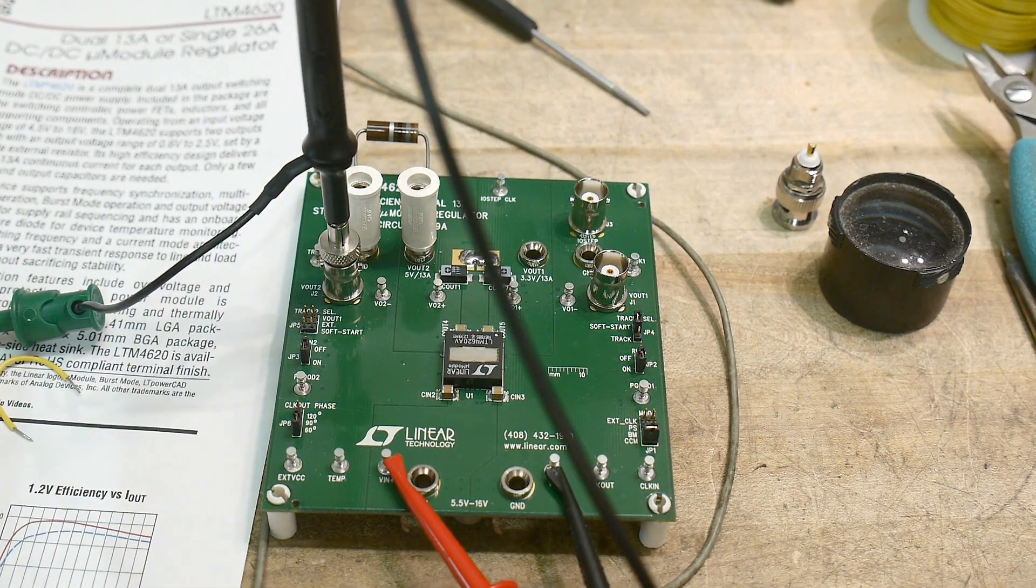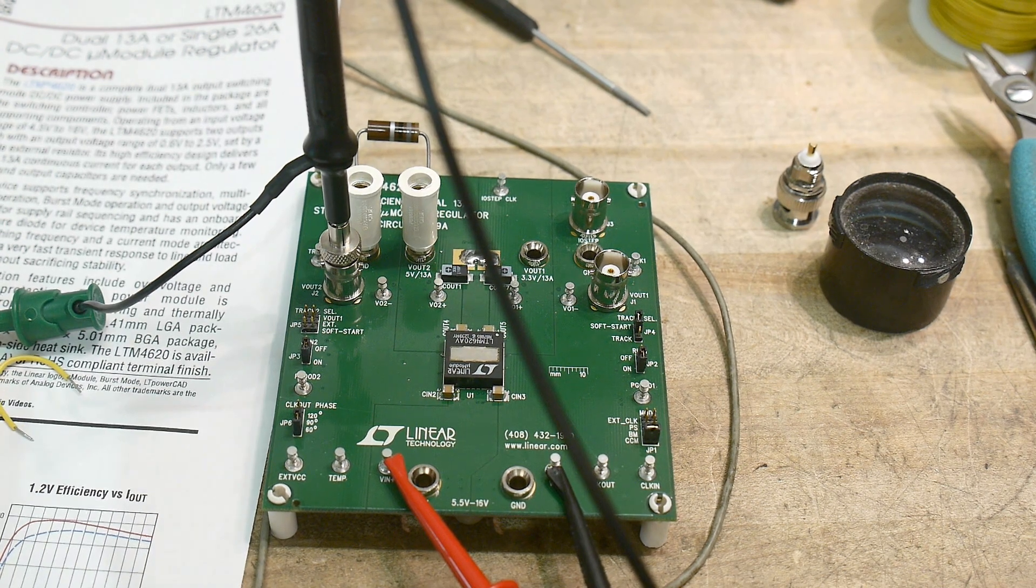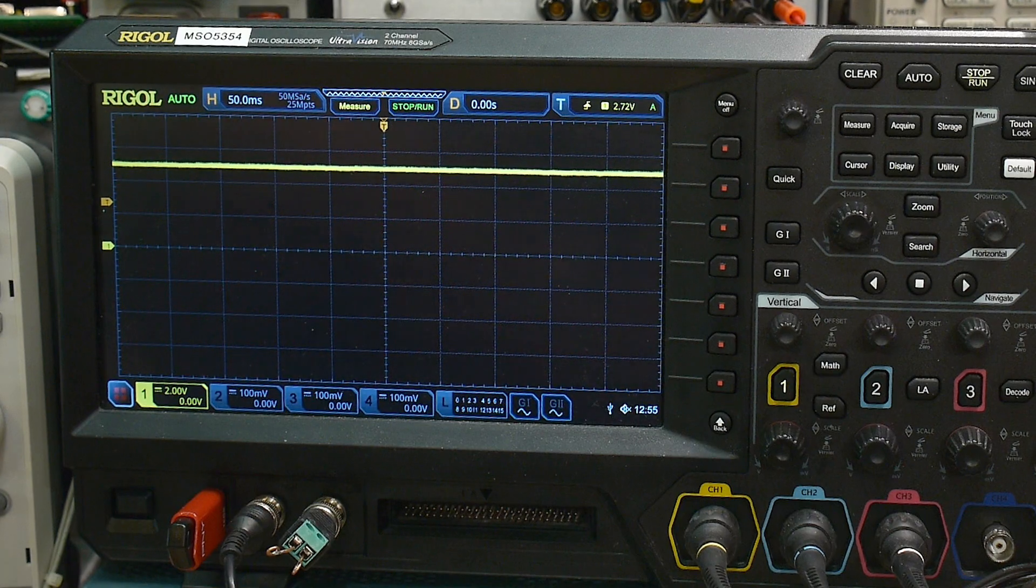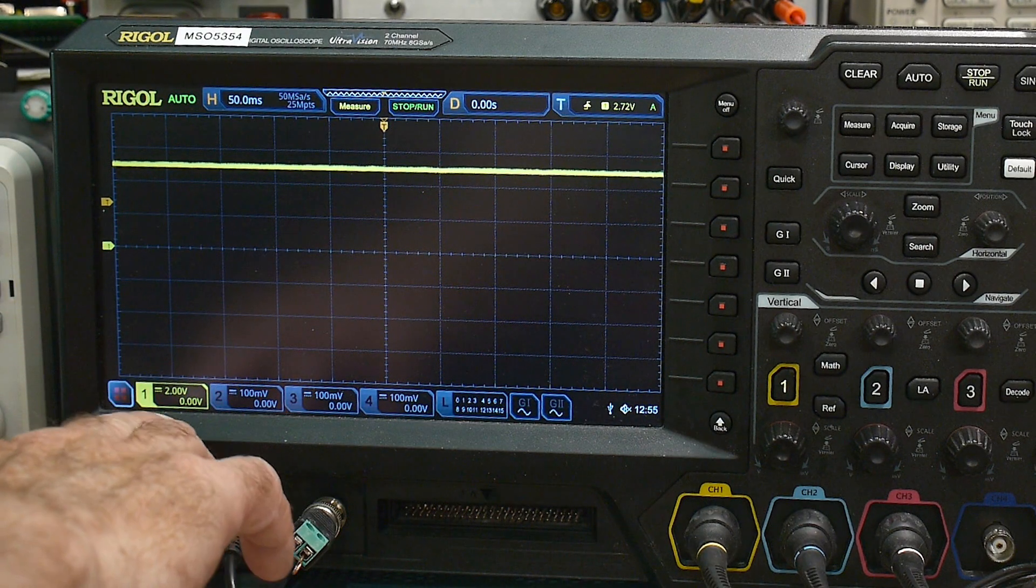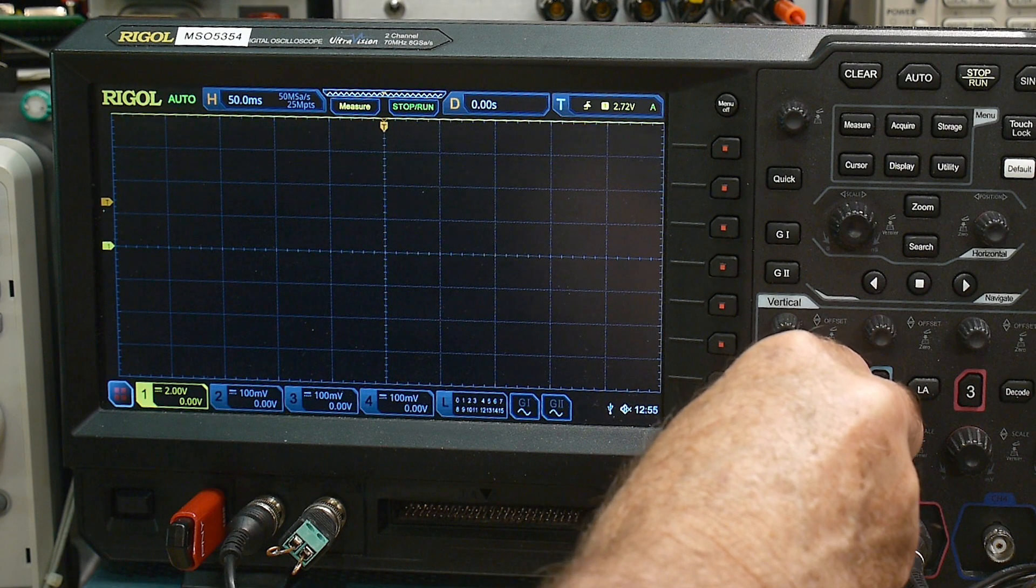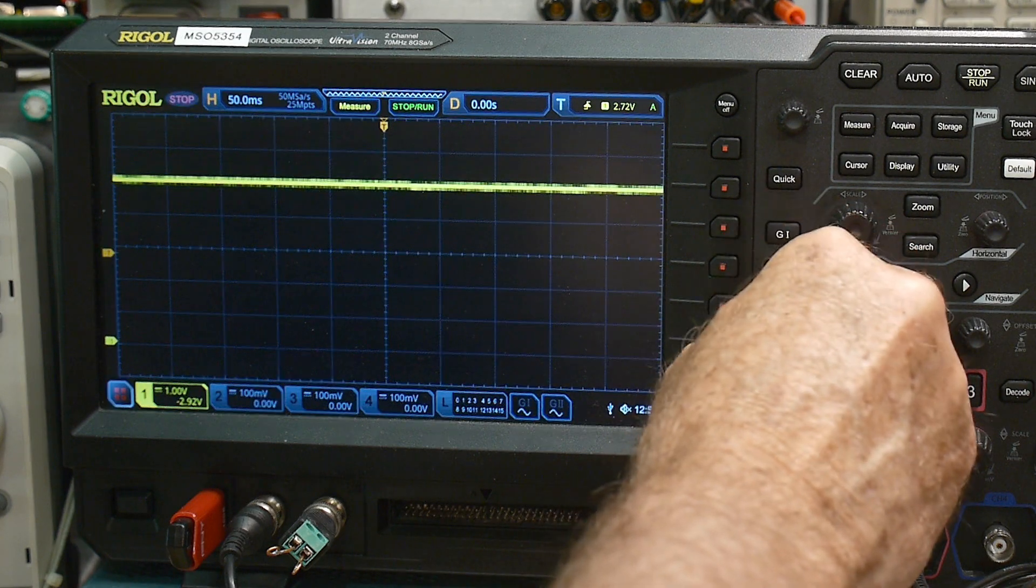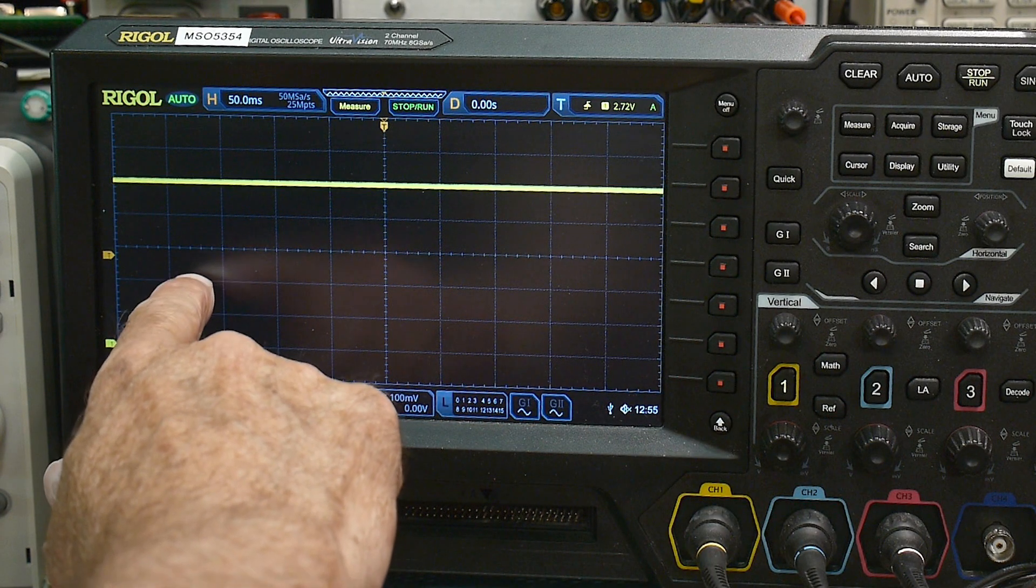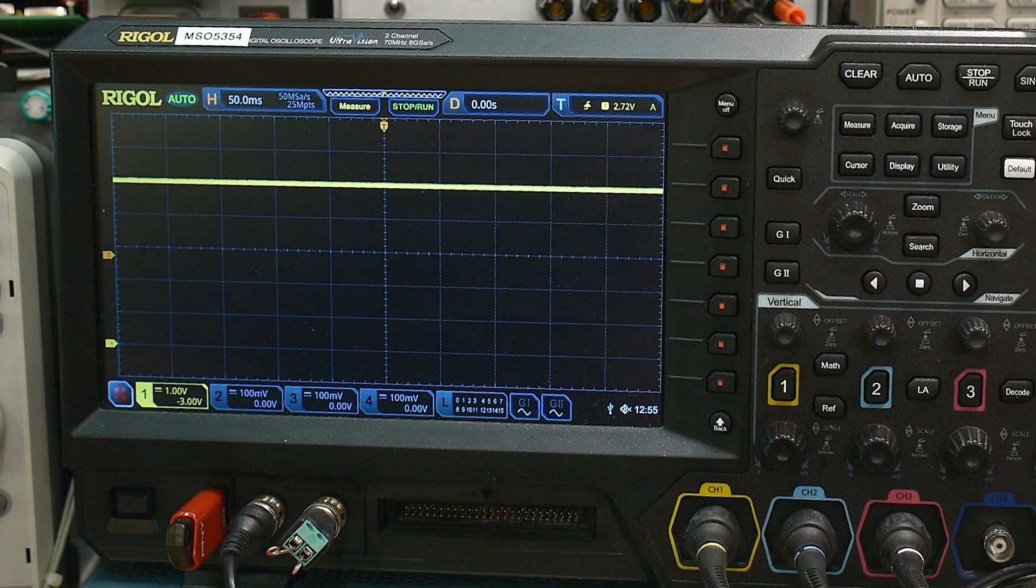So what I want to show you is the output on the oscilloscope. Alright, there we go. We have, let's see, 2 volts per division. Let's put it on 1 volt per division. And move our ground down so we can see things. There we go. So 1, 2, 3, 4, 5. We have 5 volts coming out.